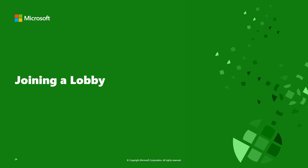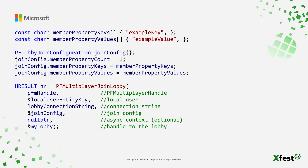Joining a lobby follows a similar pattern. Most PlayFab Multiplayer functions take the multiplayer handle, the entity key for the local user, and a configuration struct. We create a join config and set member properties. A lobby connection string is used to join a specified lobby — this string can come from an invite, MPA, or your own custom service. The lobby handle passed back can be used immediately.